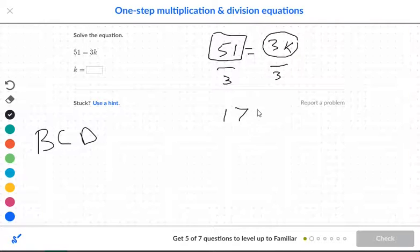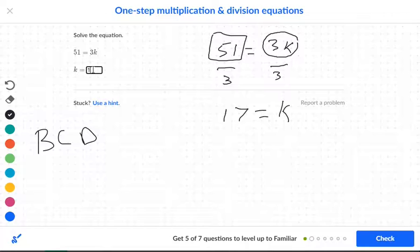So 51 divided by 3 is 17. So 17 is equal to K. So let me type in 17.